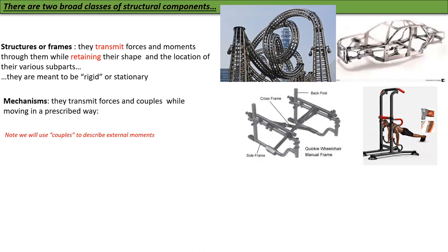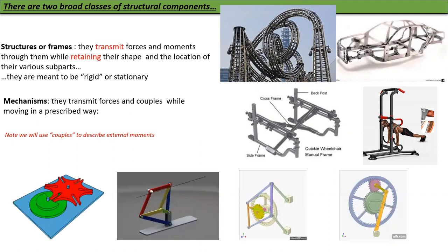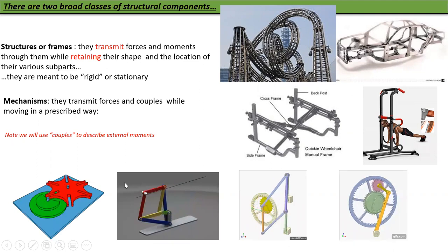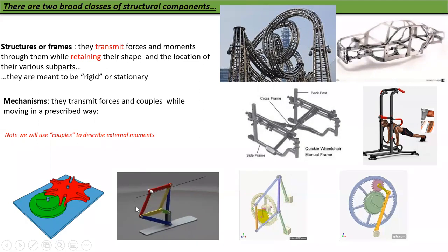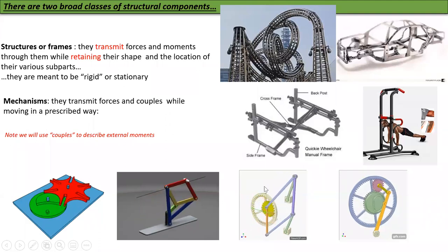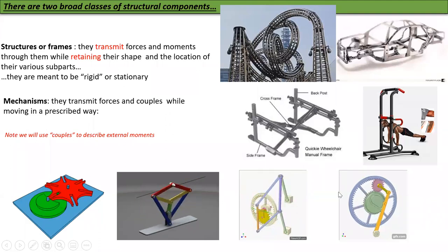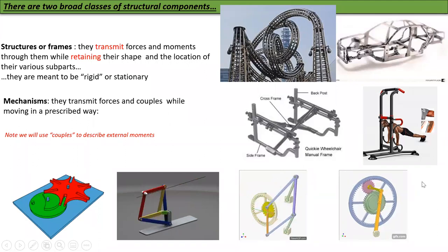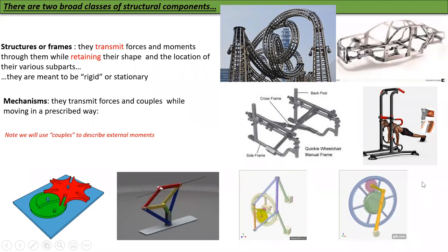Mechanisms, these are objects that transmit forces and couples while moving in a prescribed way. Mechanisms are this Geneva wheel, this linear motion pantograph system, another linear motion system, and this complex mechanism which is an epicyclic gear train.